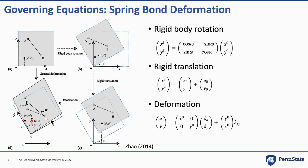Spring bond deformation takes into consideration three parts: rigid body rotation, rigid translation, and deformation. The rigid body rotation includes a rotation matrix as shown. The rigid translation is given by an equation which includes the displacement in x and y direction. Finally, the actual deformation is given by the equation which includes the strain terms.